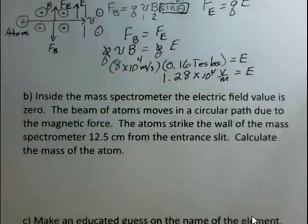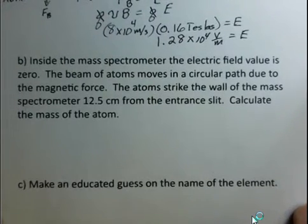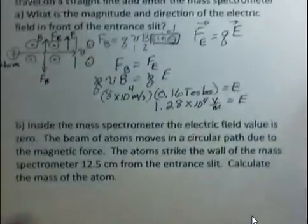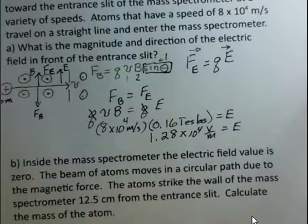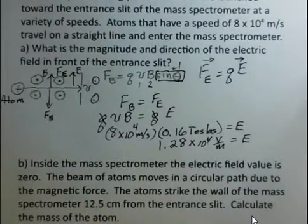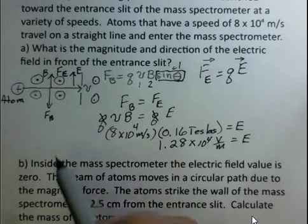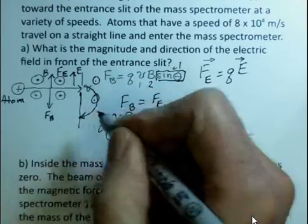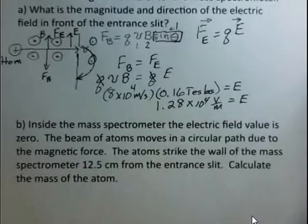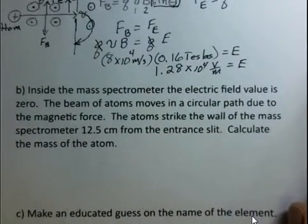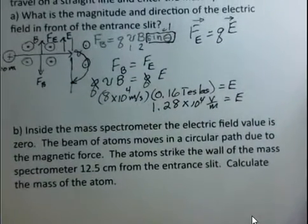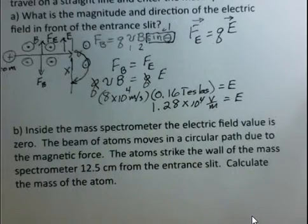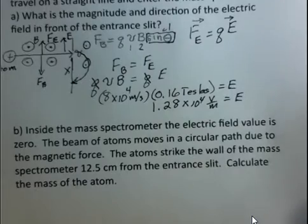Now those atoms move through the slit and go inside the mass spectrometer. We're going to take the electric field to be zero there. We still have the same magnetic field strength, and these atoms will move in a circle. They're going to feel a magnetic force still down the page. As the velocity changes direction, the magnetic force will change direction. The magnetic force is always perpendicular to the velocity. The atoms are going to come around in a semicircle and hit the wall of the mass spectrometer. This distance x of how far away from the slit the atoms hit the wall is 12.5 centimeters.